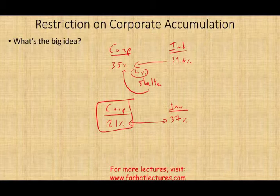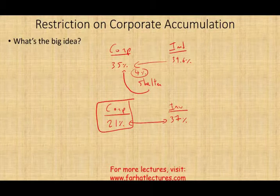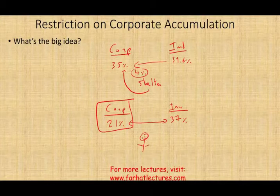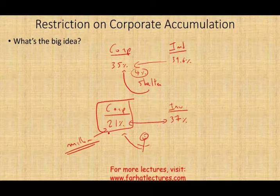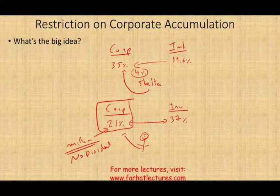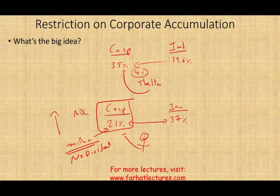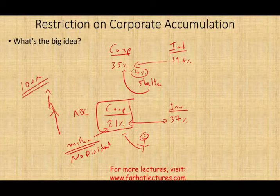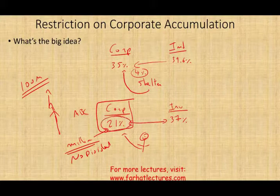Simply put, the government is aware of the difference between corporate and individual income tax. Let's assume we're dealing with a wealthy individual who makes millions of dollars in their corporation. Every year they pay 21% and pay no dividend, because they don't need the money — they have other sources of income. As a result, the company, say ABC Company, goes up in value as earnings accumulate, eventually becoming worth, say, 100 million dollars, because no dividends are being taken out.